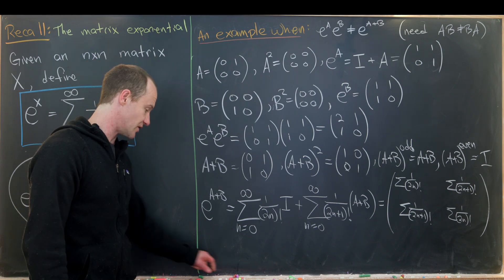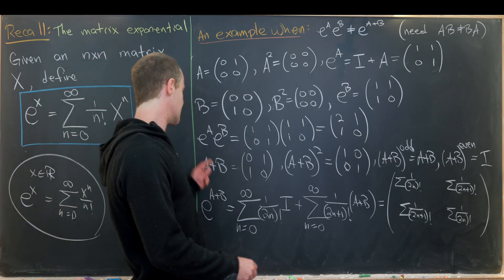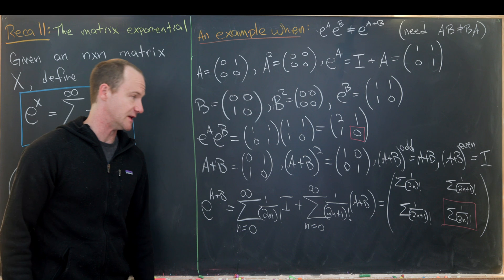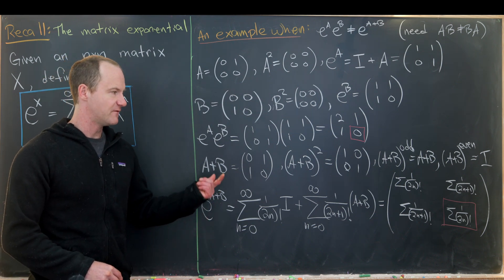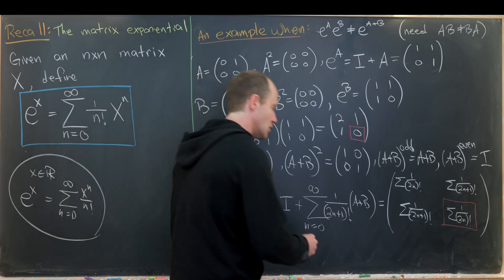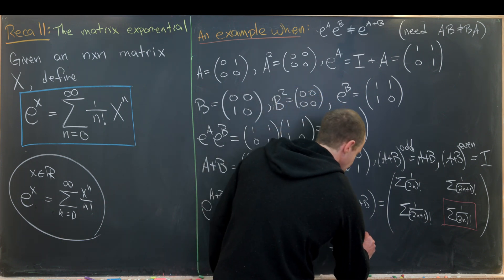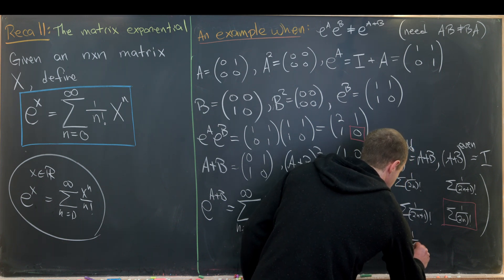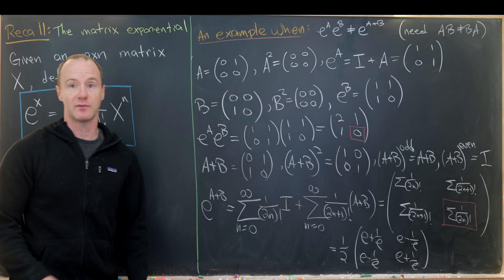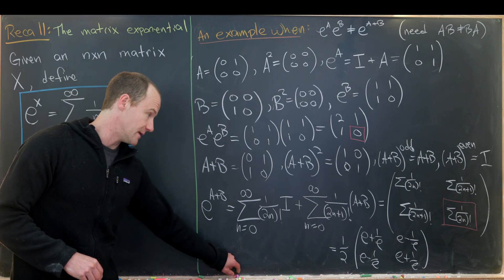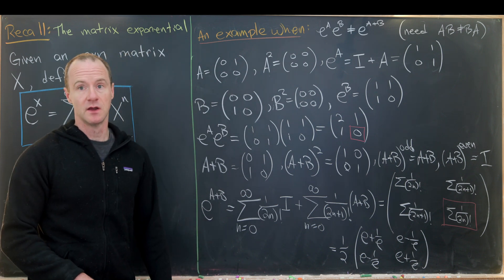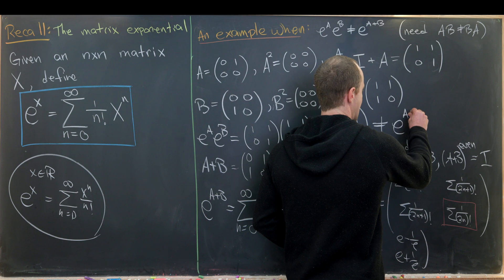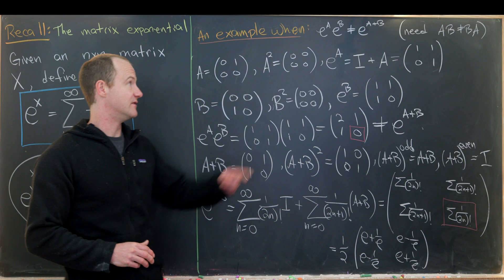We can immediately see that these are not equal, which was the goal. e to the A times e to the B has a 0 in the bottom-right entry, whereas e to the A plus B is definitely not zero there. In fact, using summation techniques for series, we can get a closed form: the diagonal entries are (1/2)(e + 1/e) and the off-diagonal entries are (1/2)(e minus 1/e) — or equivalently, hyperbolic cosine and hyperbolic sine. None of the entries of e to the A times e to the B match those of e to the A plus B, confirming we really did need commutativity in the proof.